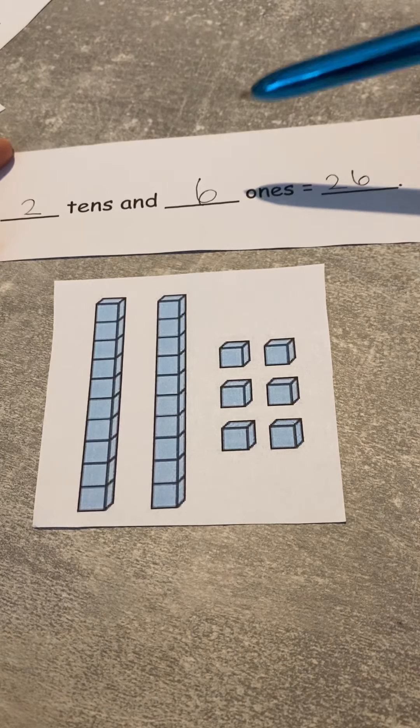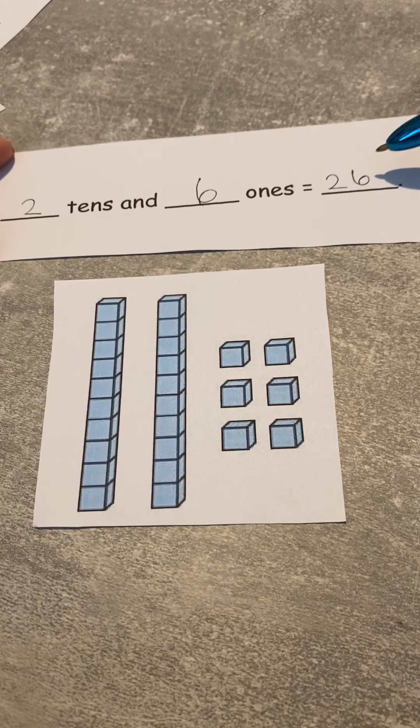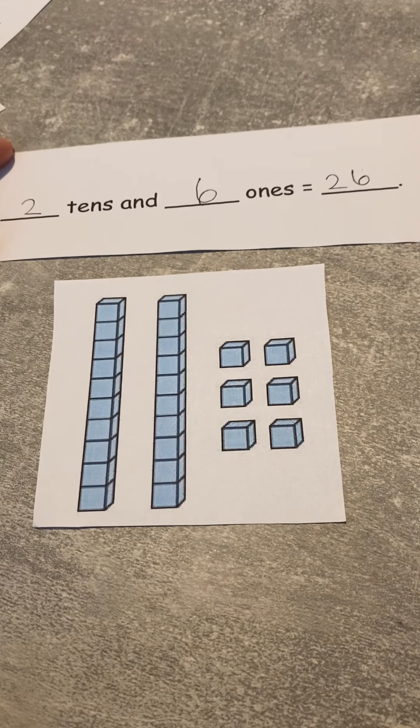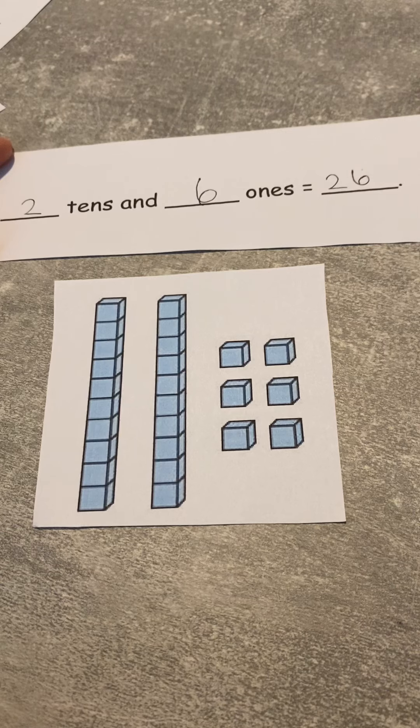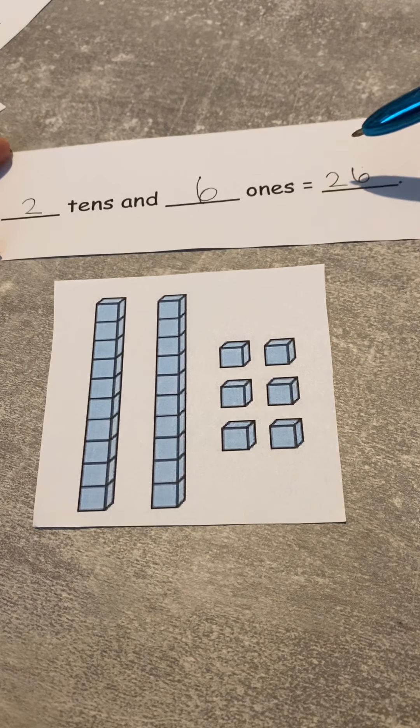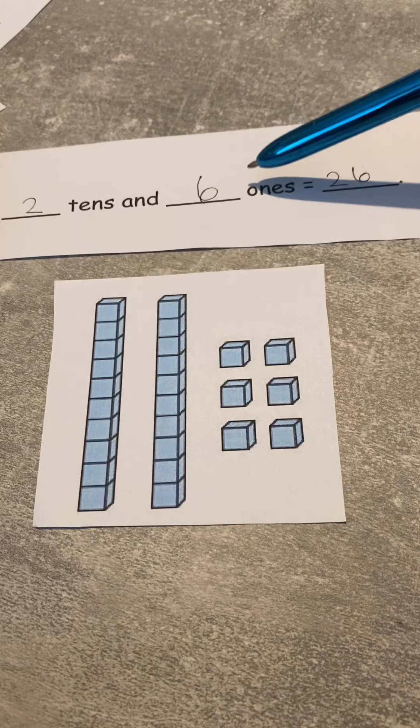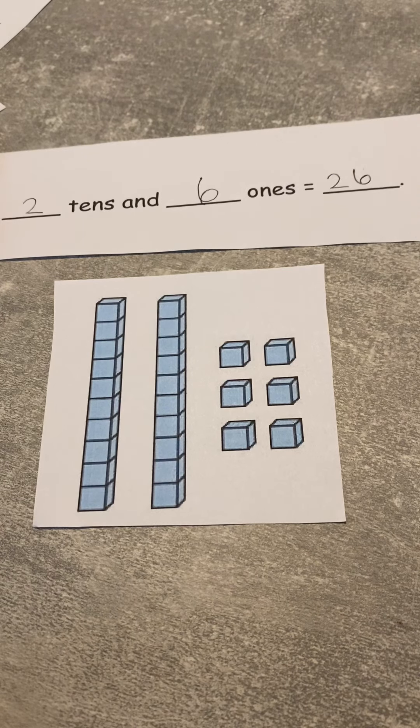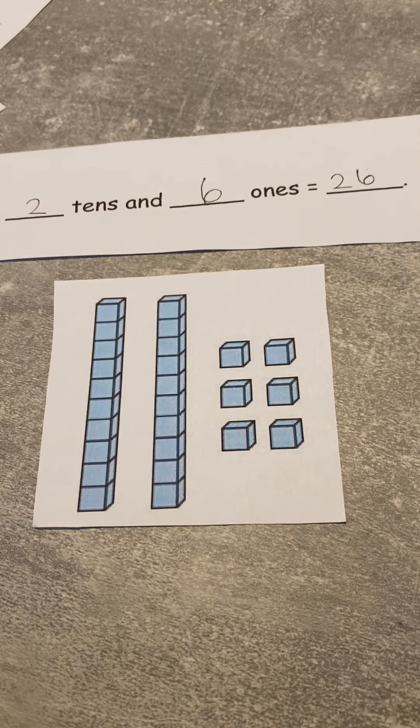So I've got two tens and six ones, so I put two, six. And what's that number? Does anyone know? Well done, it's 26!